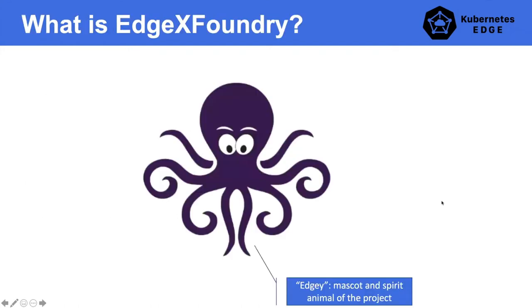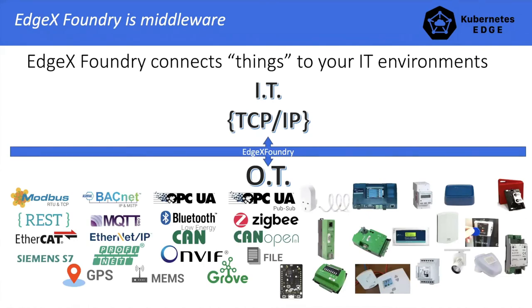So what is EdgeX Foundry? It is an open source, vendor-neutral project under the Linux Foundation with an Apache 2 license. It is also a microservices-based loosely coupled software framework for IoT edge computing, and it is hardware and OS agnostic. If we need to use one sentence to describe it: EdgeX is a middleware that connects things with your IT environment. The surface of EdgeX constitutes a dual transformation engine — first, translating information coming from sensors and devices over hundreds of protocols and thousands of formats into EdgeX; and second, delivering data to applications, enterprise and cloud systems over TCP/IP-based protocols.